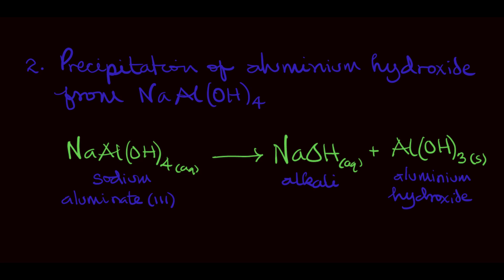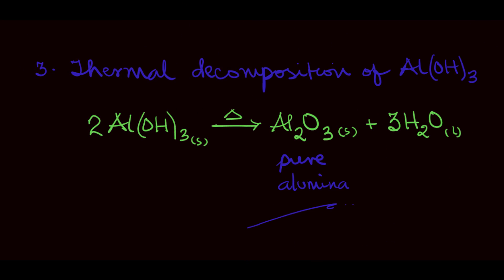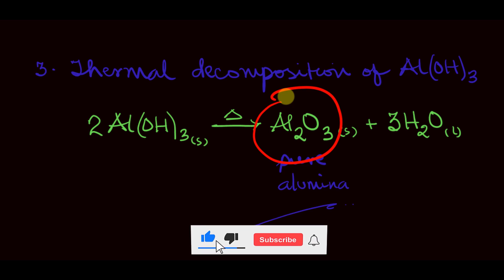After that, the next step is the thermal decomposition of aluminum hydroxide in order to obtain pure alumina. The aluminum hydroxide is strongly heated to decompose into pure alumina Al2O3. This pure alumina is what we will then use for the next process, the electrolysis process. We have completed the purification of the bauxite. The Bayer process ends here.